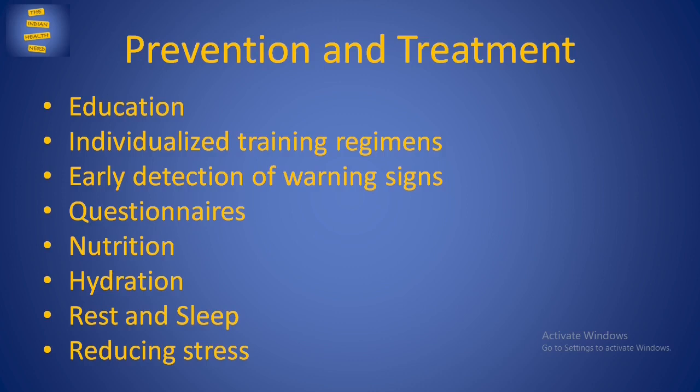Individualized Training Regimens: Every athlete has a different stress handling capacity and consequently a different tipping point for progressing to the overreached and overtrained states. Therefore, a training log should be kept for every athlete. This log should contain the measure of Rate of Perceived Exertion or RPE for that particular athlete. Coaches and athletes should use this measure to decide the volume and intensity of exercise for each individual athlete.